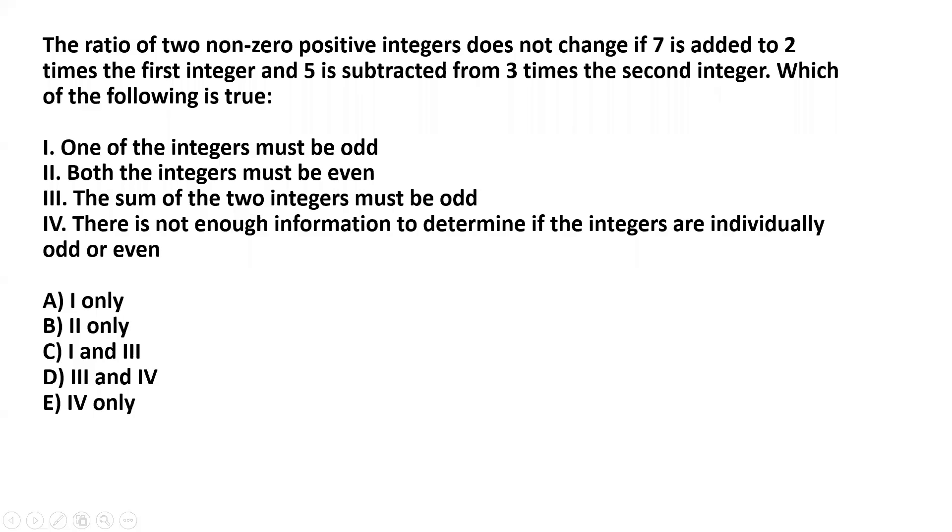The ratio of two non-zero positive integers does not change if 7 is added to 2 times the first integer and 5 is subtracted from 3 times the second integer. Which of the following is true?